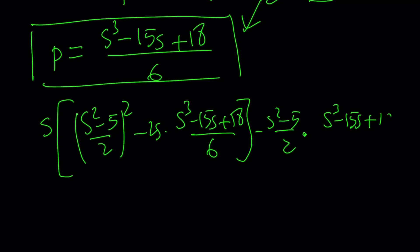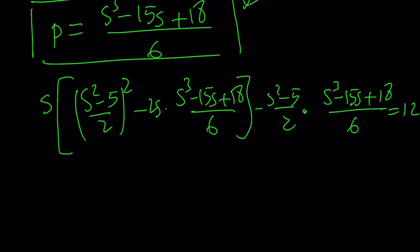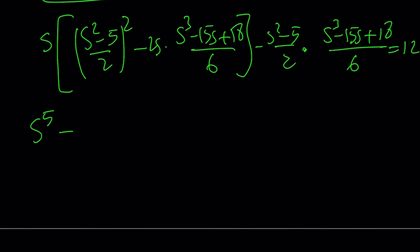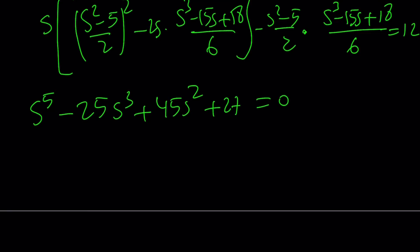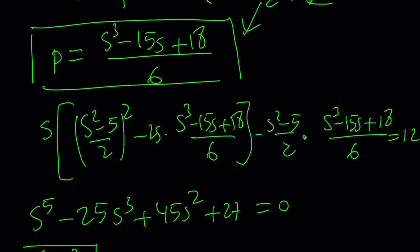If you simplify, you get the following quintic: s to the fifth power minus 25s cubed plus 45s squared plus 27 equals 0. Using the rational root theorem, you'd use the divisors of 27: 1, 3, 9, 27, plus or minus, so on and so forth. s equals 3 happens to satisfy this equation — I checked it. If you plug in s equals 3, 3 cubed is 27 plus 18 is 45, minus 45 is 0.